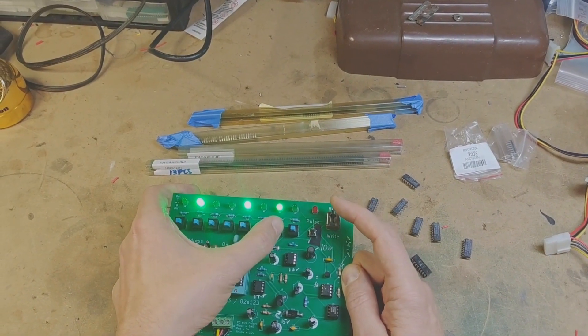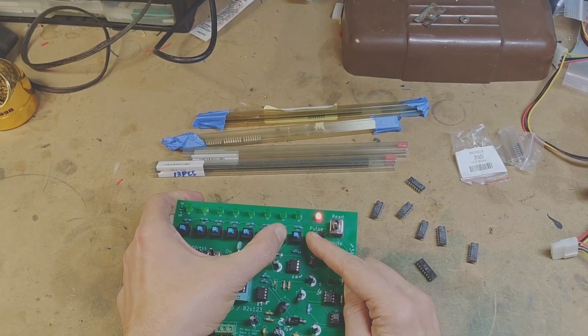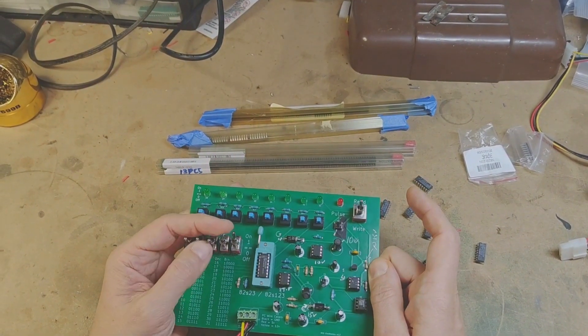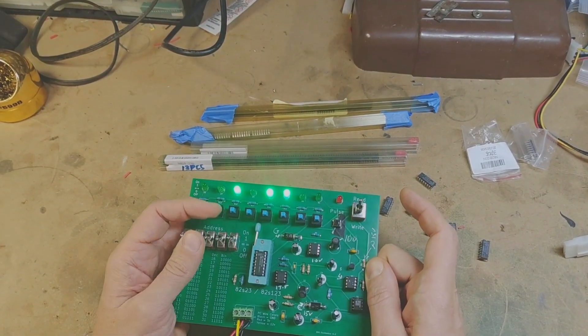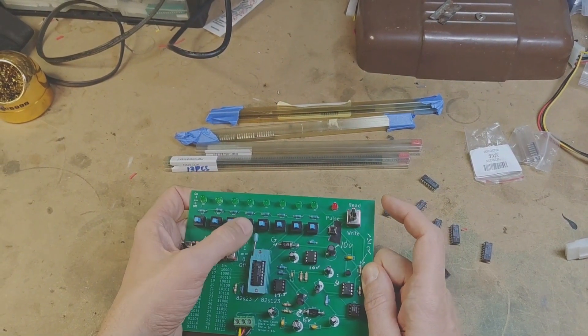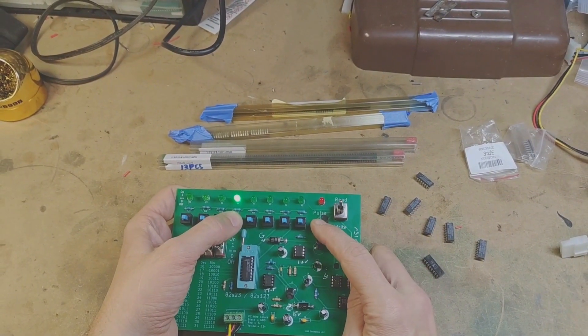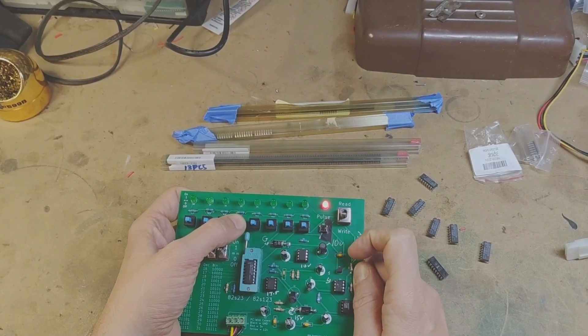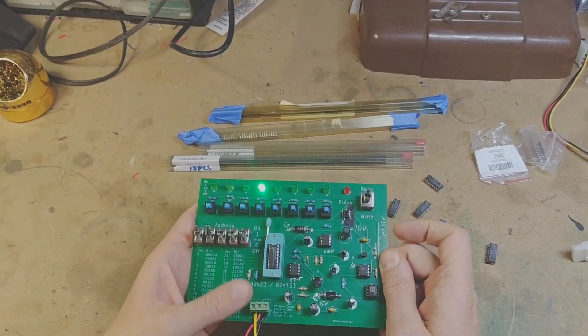So let's try another one. Let's say we want to do this one. Write, pulse, back to read. And you can see I can set the different addresses and we can see what is on these different locations. I'll try another one. Hold it down, write mode, pulse it, and there it is.